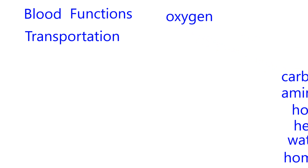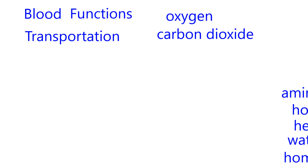Let's do some examples of transportation. Oxygen comes into the lungs during inspiration — we'll talk about that later. The oxygen diffuses across to the blood and is carried to all tissues. All those tissues then, sooner or later, generate carbon dioxide, which is transported back to the lungs and is exhaled.